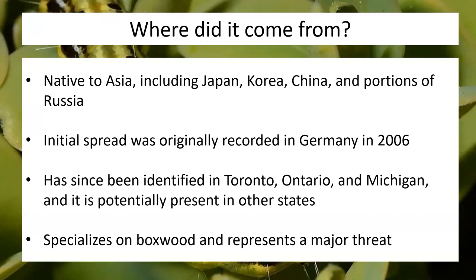It comes from areas that include Japan, Korea, China, and portions of Russia. We are not the first victims of this particular bug. The initial spread of this invader was originally detected in Germany in 2006, and it spread like wildfire. The reason for that is they also plant boxwood as an ornamental over there in Europe, and it's also growing in the wild, giving it a lot of food sources throughout European and Eastern European areas.